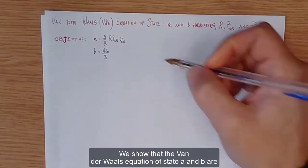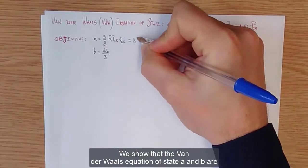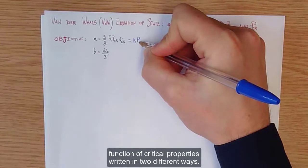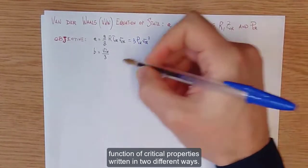Here we show that from the Van der Waals equation of state, a and b are function of critical properties written in two different ways.